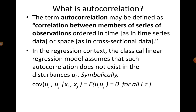The term autocorrelation can be defined as correlation between members of a series of observations, either ordered in time or ordered in space. When ordered in time, we are referring to time series data where members of the series are correlated with each other. When correlated over space, we are talking about correlation observed in cross-sectional data. In particular, we are concerned about correlation between the error terms ui, uj, and so on.